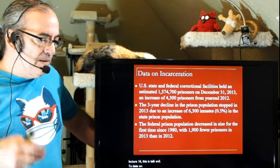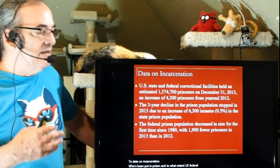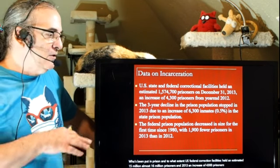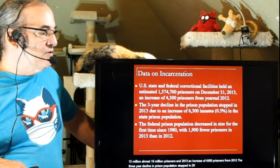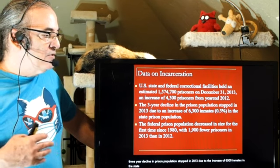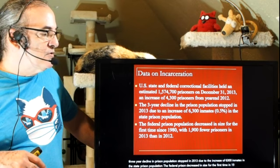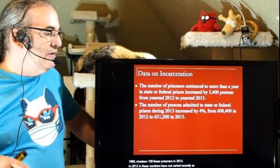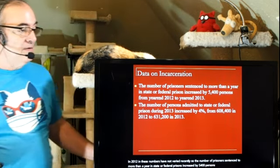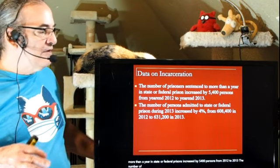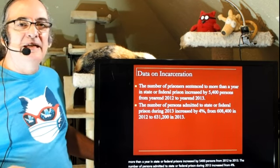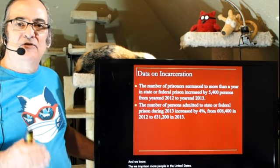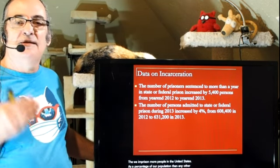Data on incarceration — who's being put in prison and to what extent? U.S. federal correction facilities held an estimated 1.5 to 1.6 million prisoners in 2013, an increase of 4,300 prisoners from 2012. The three-year decline in prison population stopped in 2013 due to an increase of 6,300 inmates in the state prison population. The federal prison decreased in size for the first time since 1980 — 1,900 fewer prisoners in 2013 than 2012. The number of prisoners sentenced to more than a year in state or federal prisons increased by 5,400 persons from 2012 to 2013.